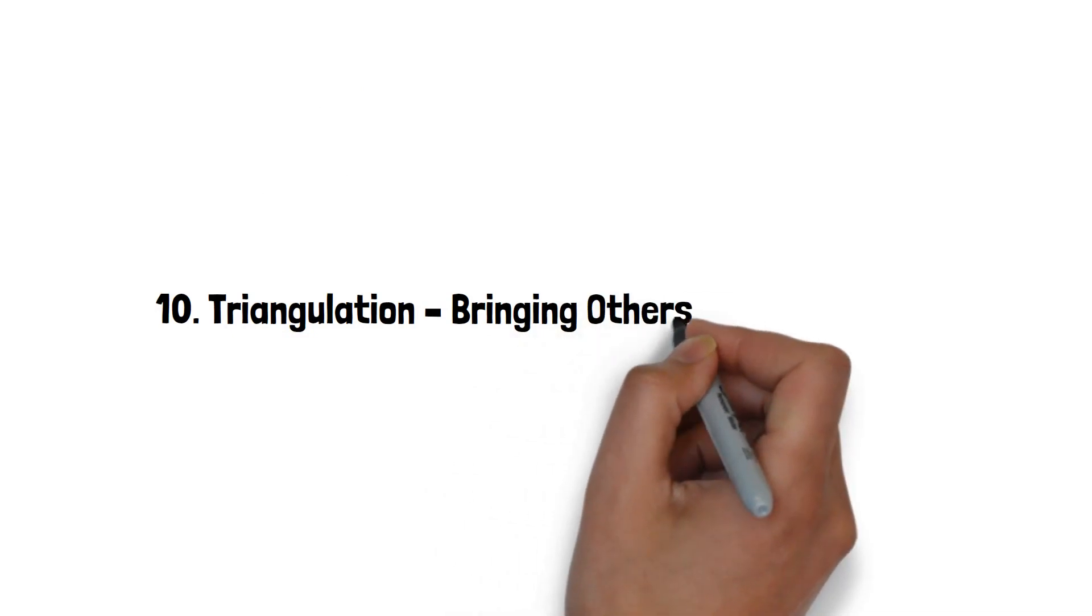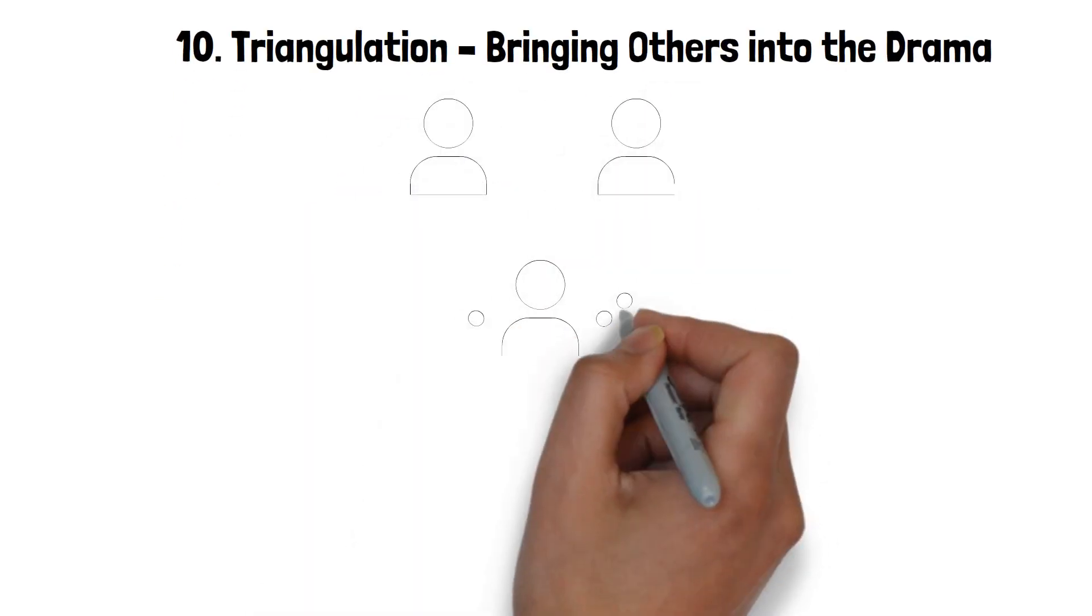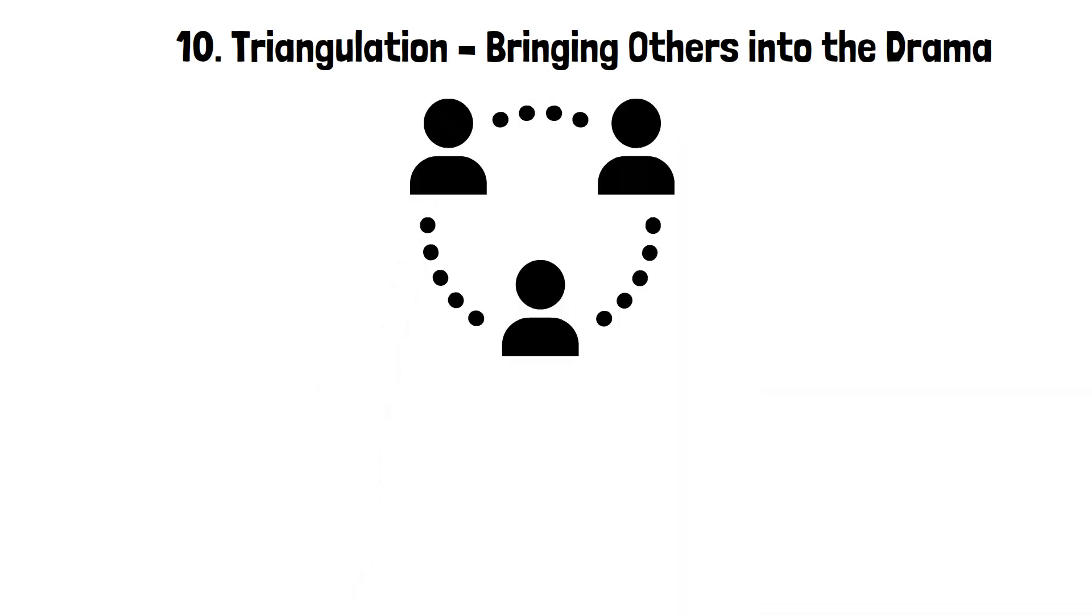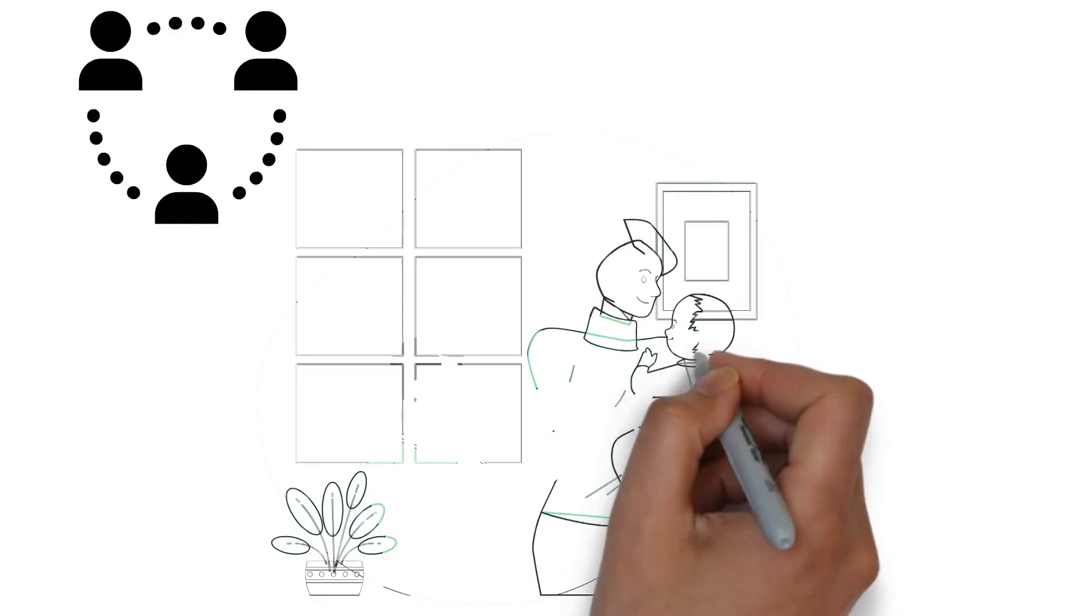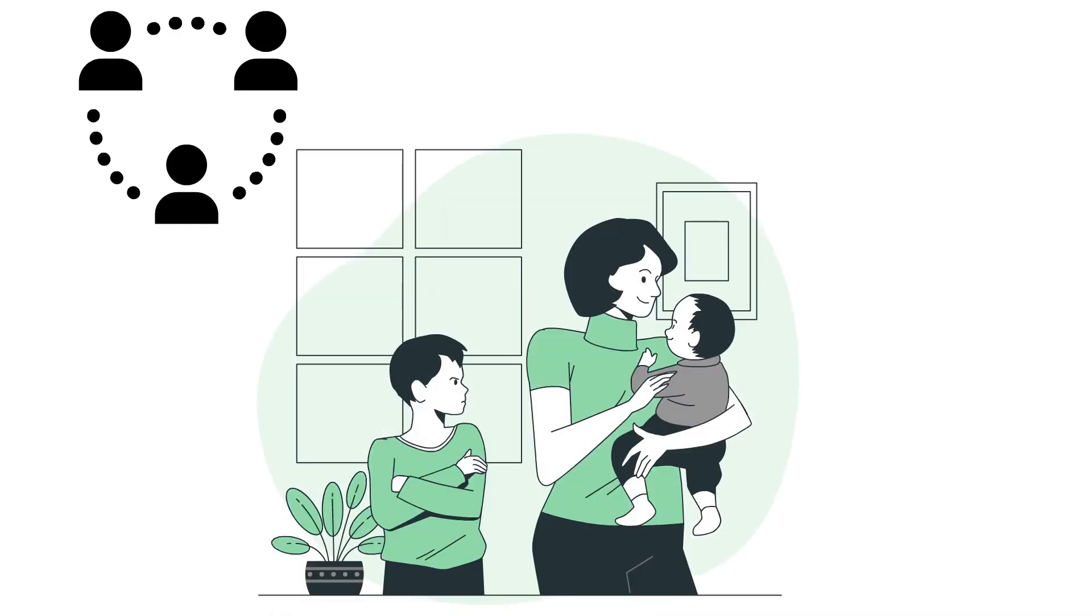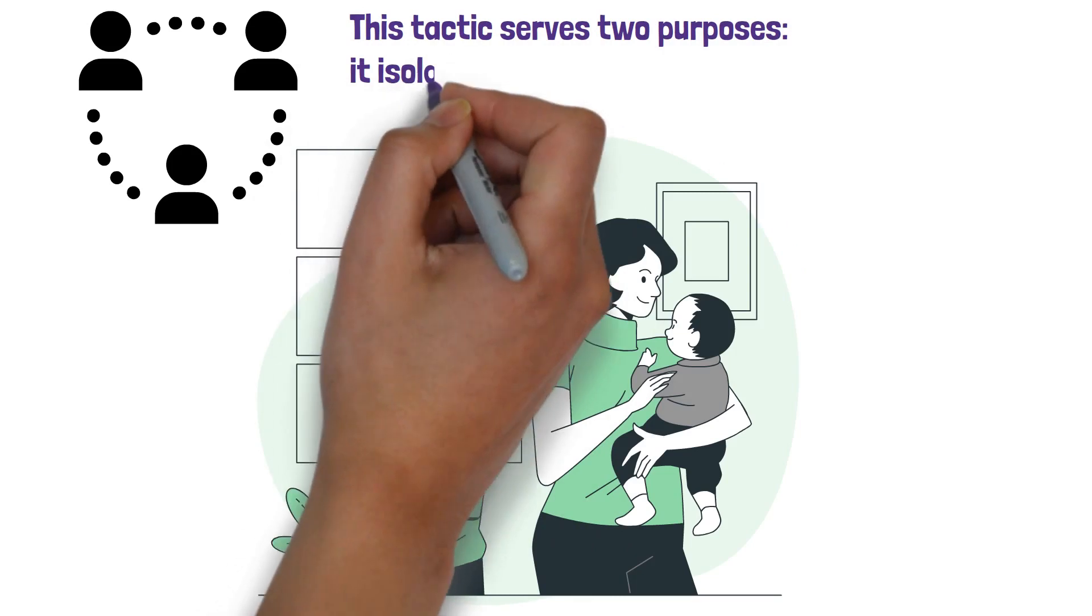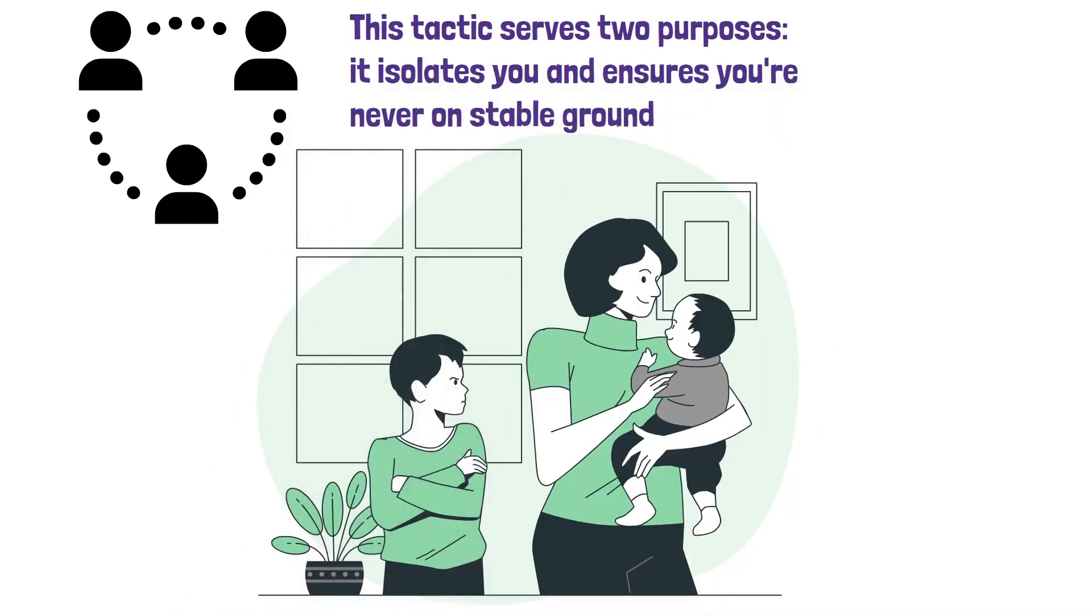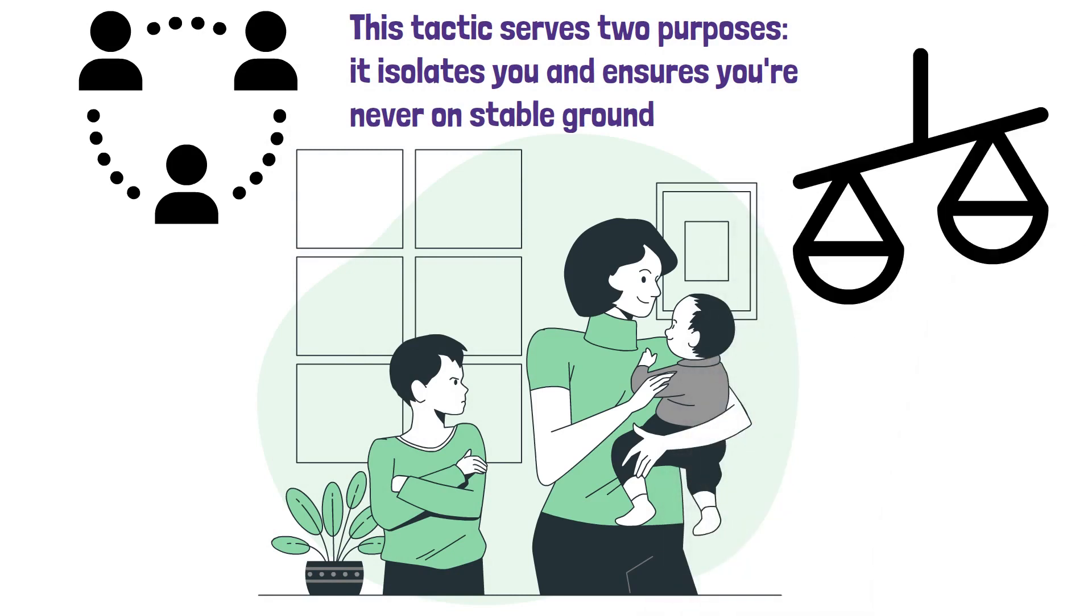10. Triangulation. Bringing others into the drama. The manipulator loves to create a triangle. They might bring another person into the mix, perhaps to make you feel jealous or to validate their perspective. For instance, in a disagreement, they might often bring up someone else who agrees with them. This tactic serves two purposes. It isolates you and ensures you're never on stable ground. The constant comparison and need to win them over can be exhausting.